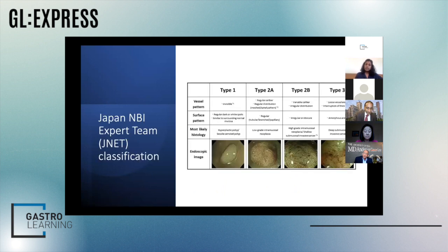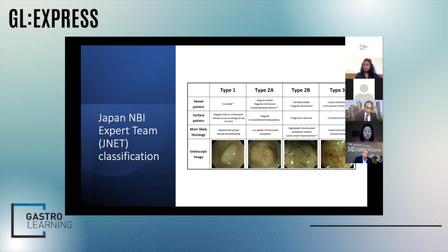I also want to highlight the J-Net classification, used a lot more in the east but also here. It has an extra category, type IIb, which highlights a polyp with variable caliber vessels and irregular surface pattern but perhaps not deeply invasive submucosal cancer. These polyps can still be endoscopically resected, and that's why it's useful to learn these classifications.